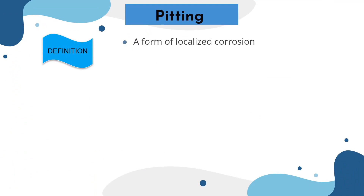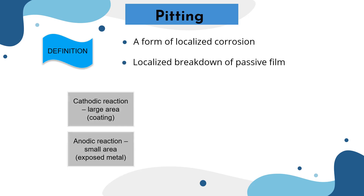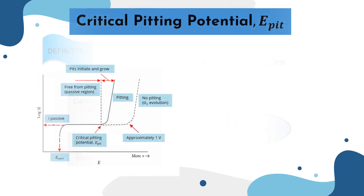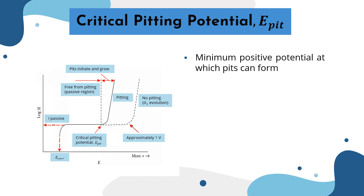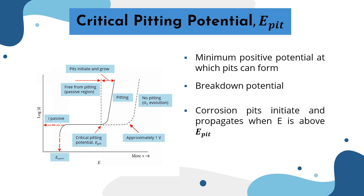Pitting is a form of localized corrosion on a metal surface. It occurs due to the localized breakdown of the passive film, usually by chloride ions. When a cathodic reaction in a large area sustains an anodic reaction in a small area, it will form a pit or small hole. Critical pitting potential is the minimum positive potential at which pits can form, also known as the breakdown potential.